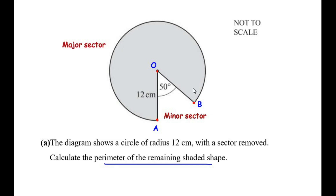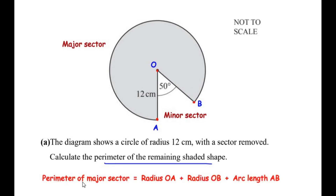We need to find the perimeter of the remaining shaded shape. The perimeter is the border or outline of the shape, made up of the two radii OA and OB, and the arc length of the major sector AB. So the perimeter of the major sector equals radius OA plus radius OB plus arc length AB.